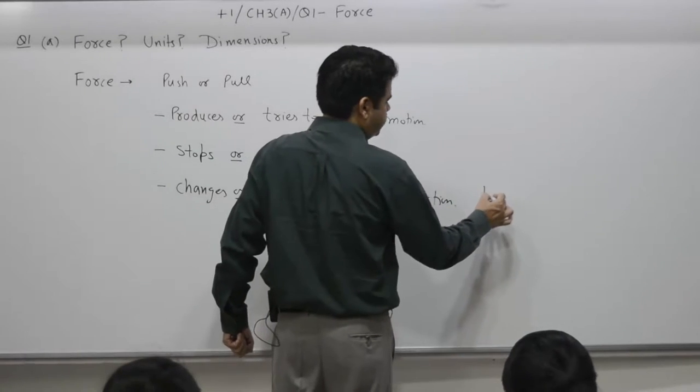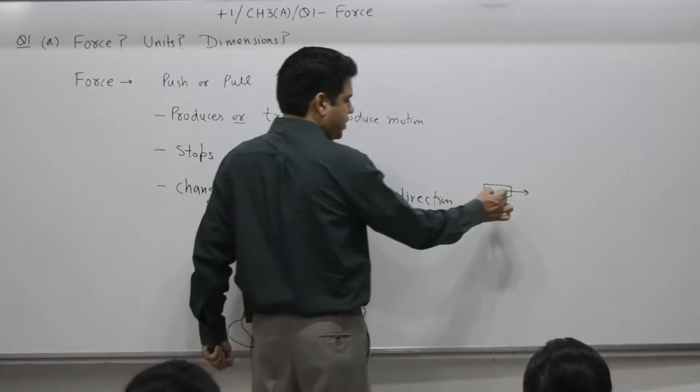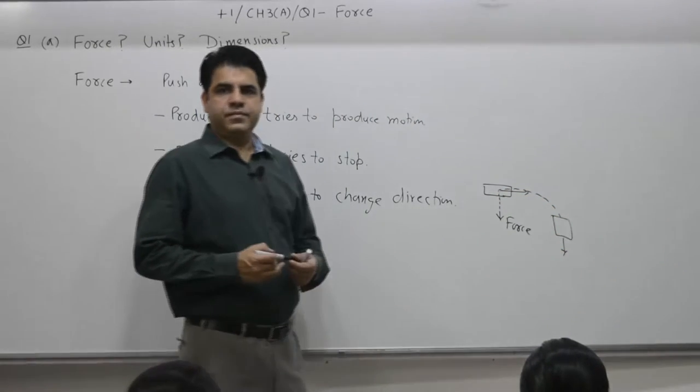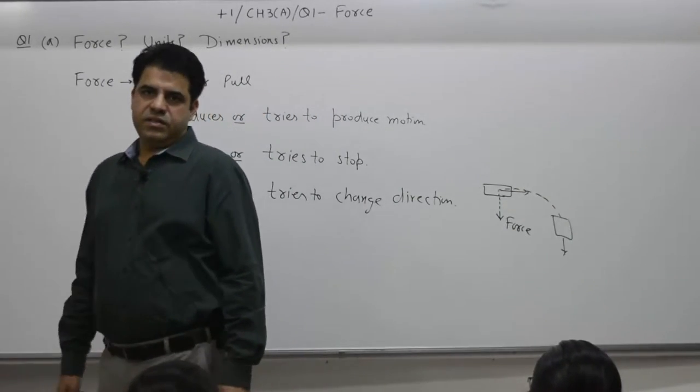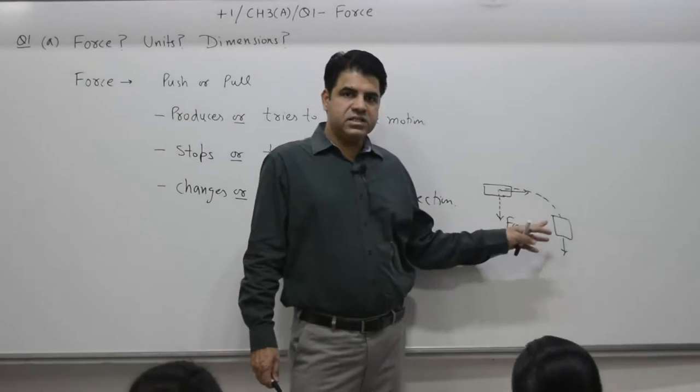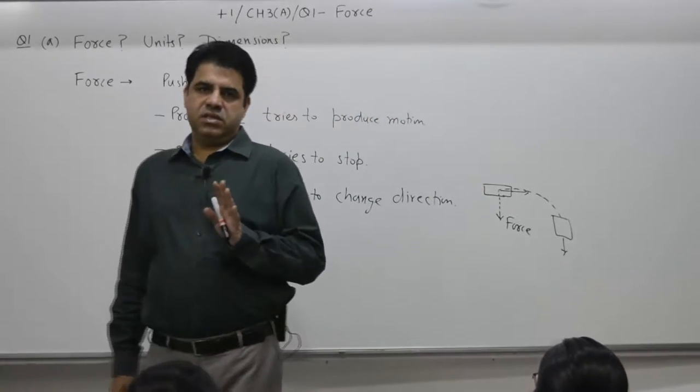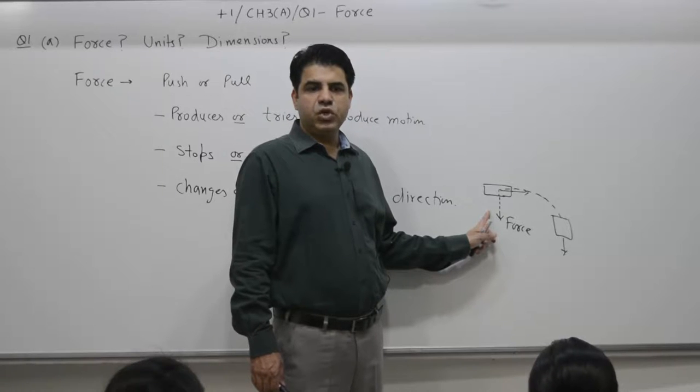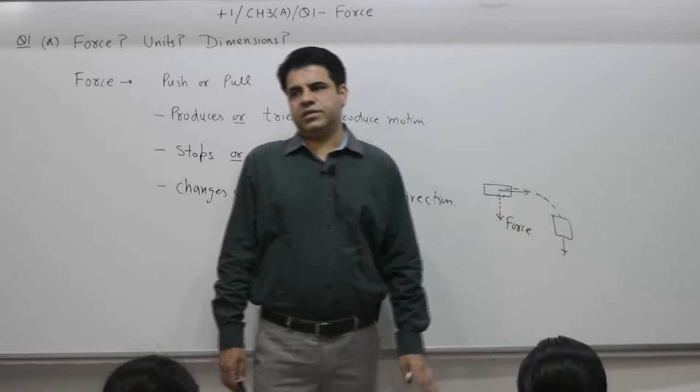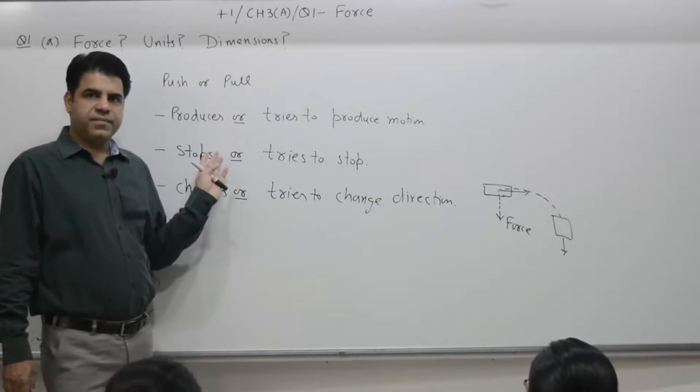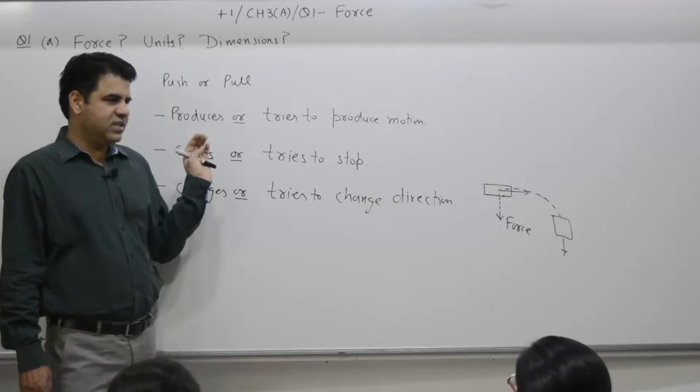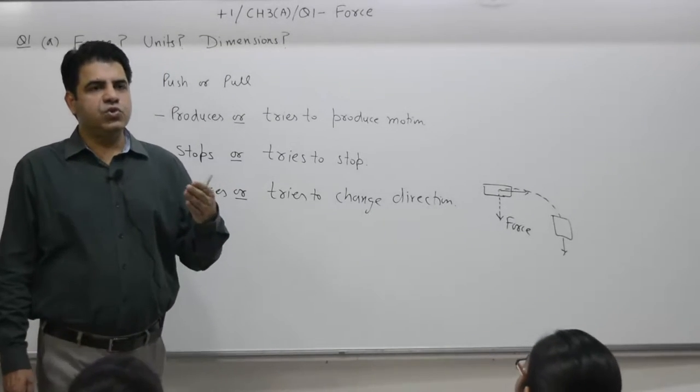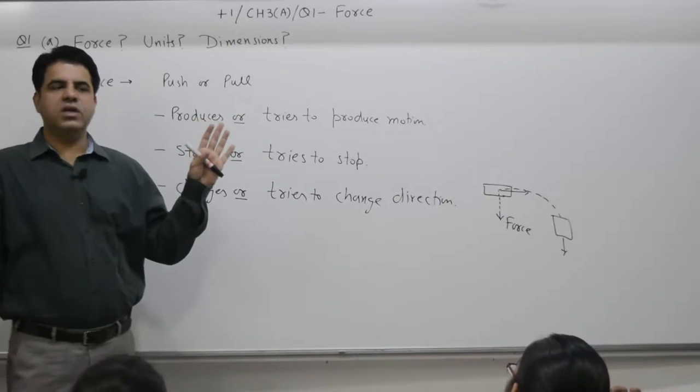Third part: changes or tries to change direction of motion. Example: if there is an object moving in one direction, you take a rope and apply a force in a perpendicular direction. The outcome is the object will set in circular motion with the same speed. Speed remains the same but only direction changes. This force has reduced the speed? No. Increases the speed? No. But changes the direction.